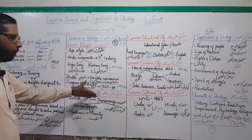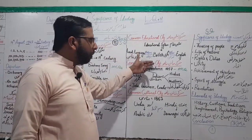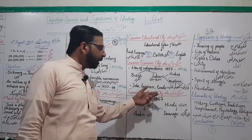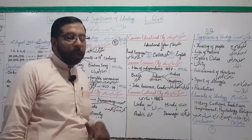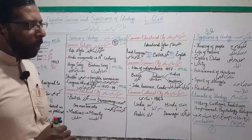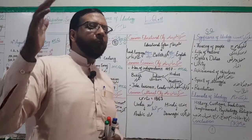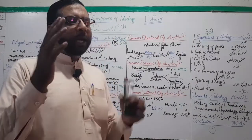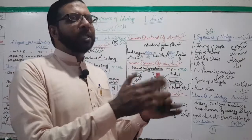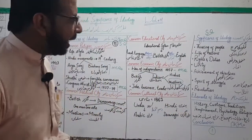The five sources are: common religion, common political objectives, common educational objectives, common economic objectives, and common cultural objectives. Now let us discuss these in the perspective of the ideology of Pakistan — ideology of Pakistan ke banane mein in five sources ka kya role tha — we will discuss this briefly. The first one is common religion.